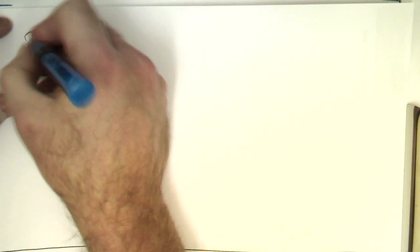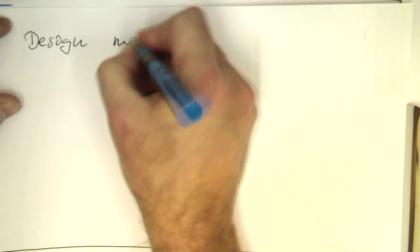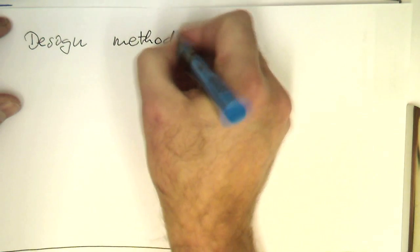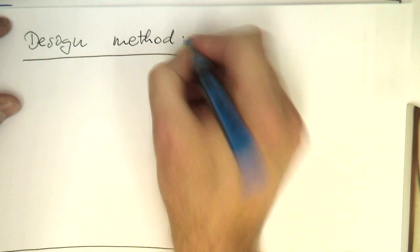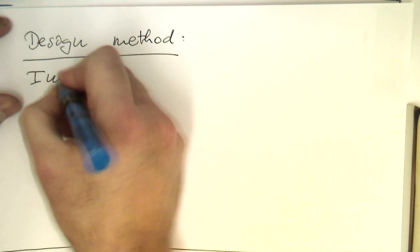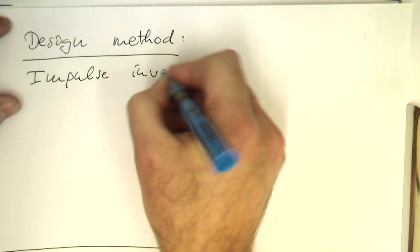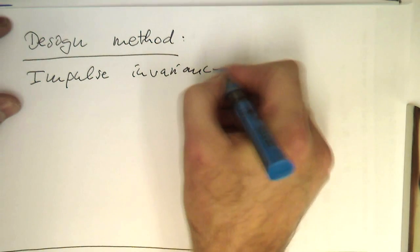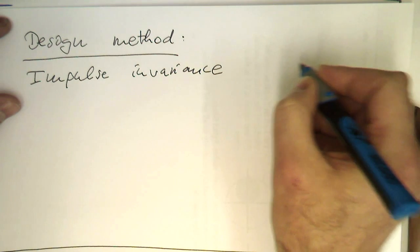So now we can define a design method with our knowledge, which is called the impulse invariance method.